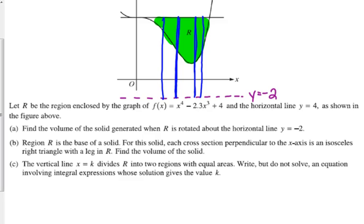The outer radius is going from the line we're rotating about up to this horizontal line, y equals 4. So that radius is always what length? 6. Alright, so our outer radius is 6.